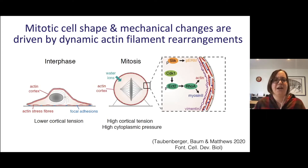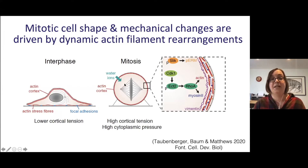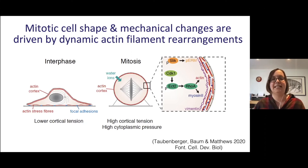Over the last few years, work by our lab and many others has uncovered molecular mechanisms of this dramatic change to cell shape and mechanics during division. Three principal pathways are at work: cells must lose adhesion to the substrate; water enters the cell, increasing cytoplasmic pressure; and actin filaments are completely rearranged. In mitosis, interphase actin structures like stress fibres are disassembled and actin filaments are recruited into a cortex underlying the plasma membrane, which gives mitotic cells their characteristic round shape and rigidity.